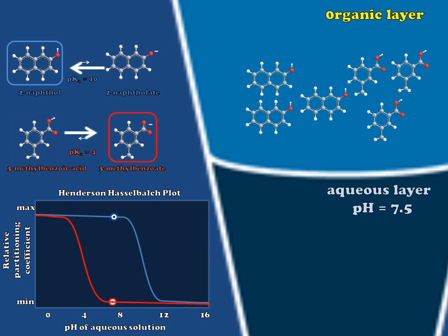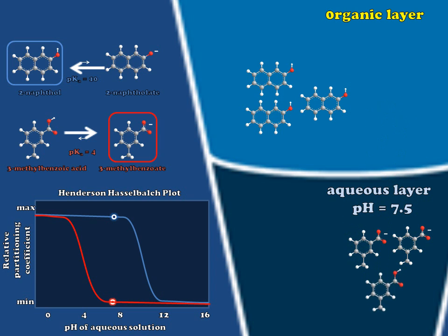The consequence of this is, of course, that this equilibrium will be shifted to the right and that most of our methylbenzoic acid will accumulate as methylbenzoate in the aqueous layer. At this point, we have achieved a good separation of our compounds, or at least as good of a separation as one could hope for.